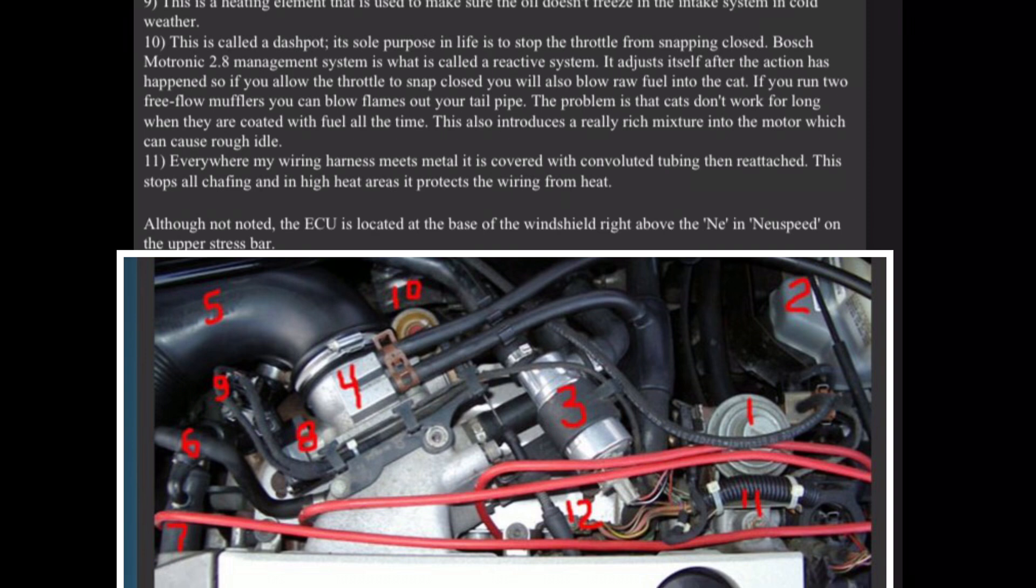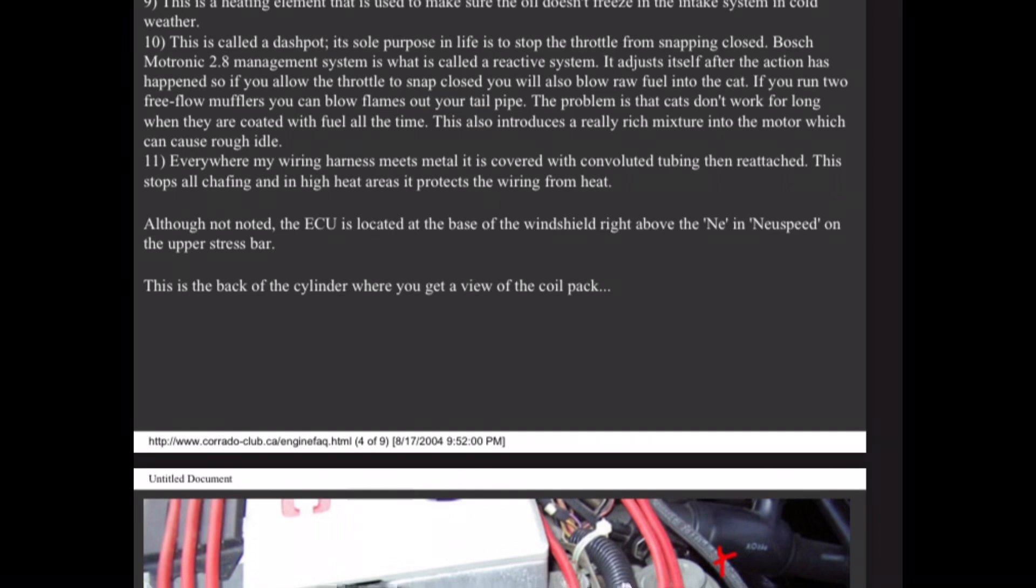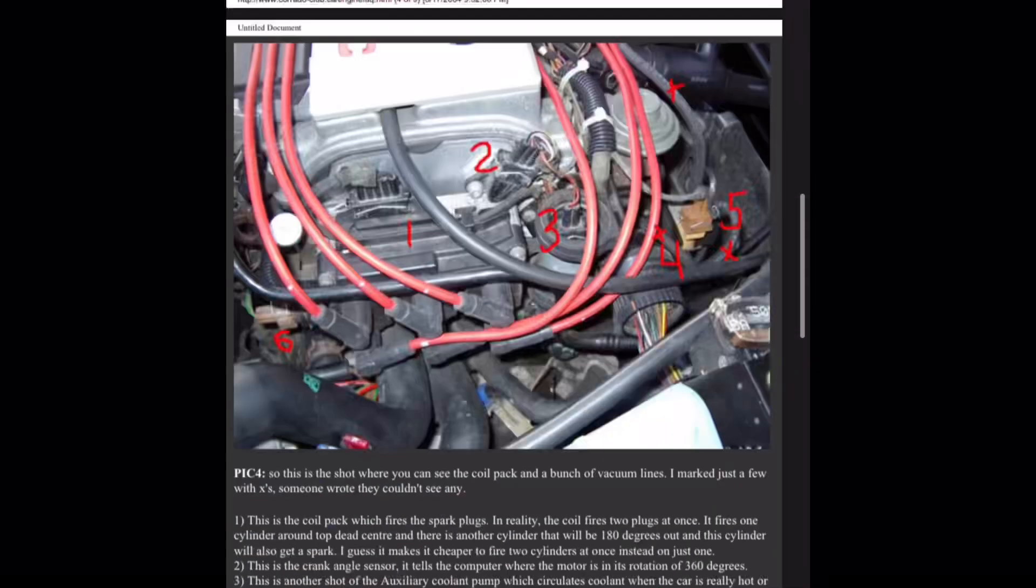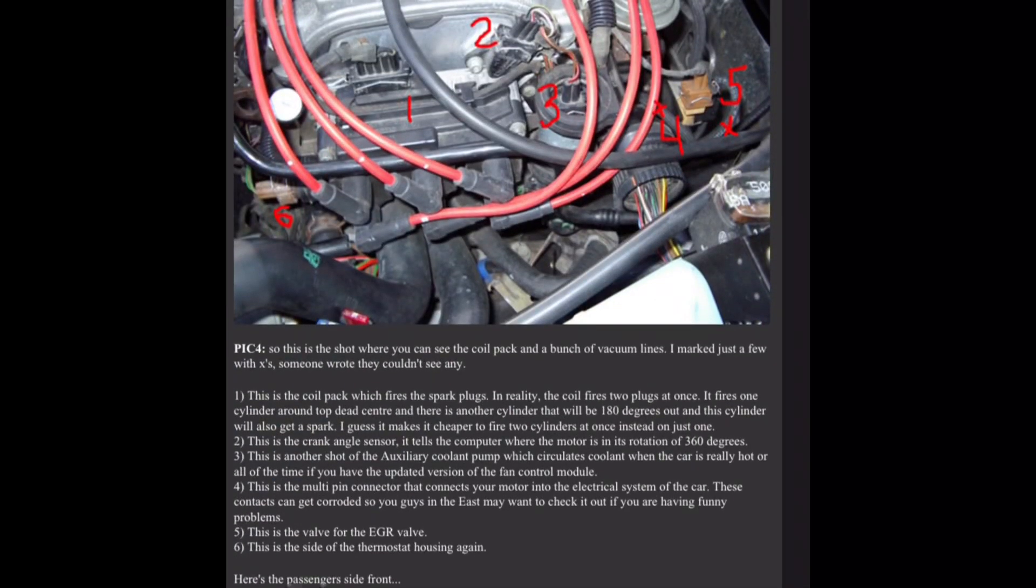Eleven, everywhere my wiring harness meets metal it is covered with convoluted tubing then reattached. This stops all chafing and in high heat areas it protects the wiring from heat. Although not noted, the ECU is located at the base of the windshield right above the neon speed on the upper stress bar. This is the back of the cylinder where you get a view of the coil pack, pick four. So this is the shot where you can see the coil pack and a bunch of vacuum lines. I marked just a few with X's. Someone wrote they couldn't see anyone.